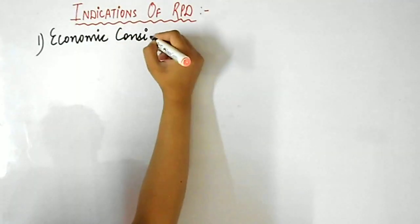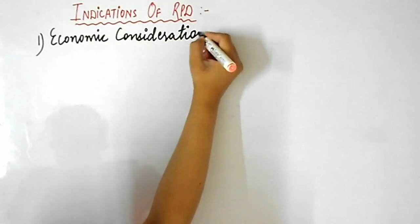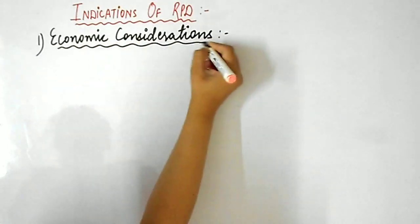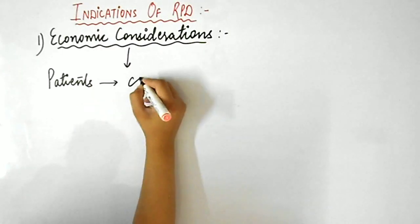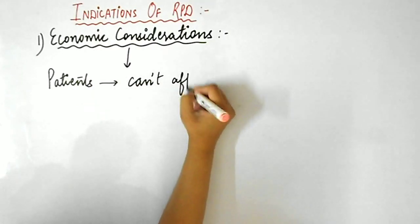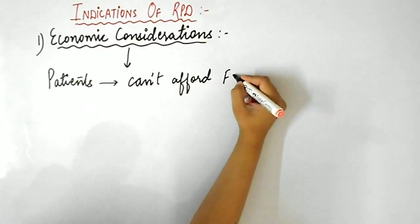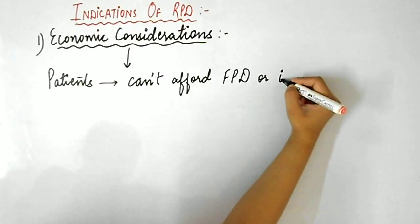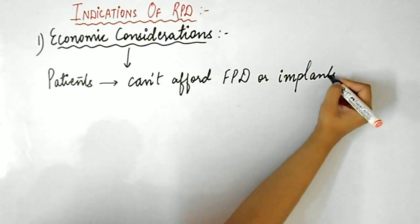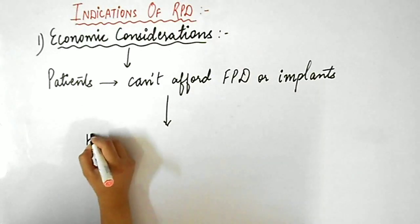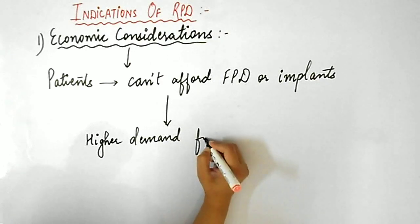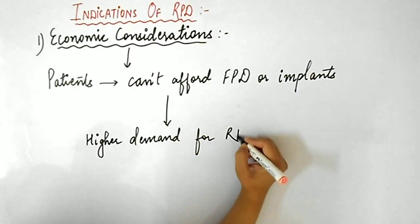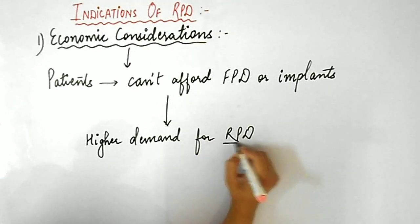Now the question is when to give RPDs to the patient. First is economic considerations - those patients who cannot afford FPD or implants. The treatment of choice for a partially dentulous patient when all other factors are favorable is FPD or implants, but not all patients can afford these, resulting in higher demand for RPDs.